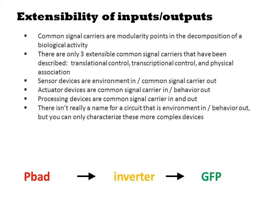There isn't really a name for a circuit that is environment in, behavior out, but it is buildable, and with a little tuning it is usually possible to have the function of all three components manifested in the complete system. Here we illustrate a trivial combination of one from each class. The sensor PBAD drives transcription of the input promoter for an inverter, which drives expression of GFP. If we get the ribosome binding sites all tuned correctly, this device responds to increasing environmental concentrations of arabinose with decreasing fluorescence caused by the inversion.